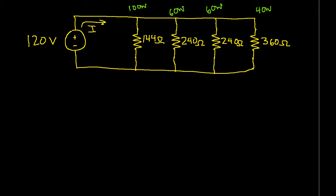I'll label the current coming out of the source as I, the current going through the 100 watt bulb as I1, the current going through the first 60 watt bulb as I2, the current going through the second 60 watt bulb as I3, and the current going through the 40 watt bulb as I4. And again, I want to find out what the total current is. So I can write down KCL, which says that the total current flowing into the node is equal to I1 plus I2 plus I3 plus I4.